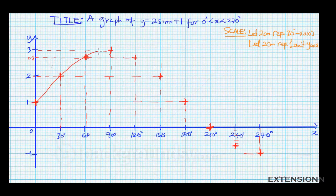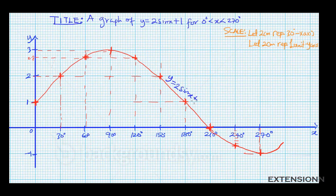Draw a smooth curve connecting all the plotted points. We now have a good curve for y equals 2 sin x plus 1. Label the x-axis and the y-axis. All vital details — the title, scale, y-axis label, and x-axis label — are very important to get all your marks.